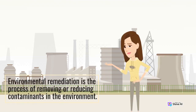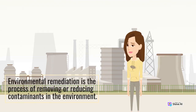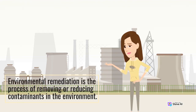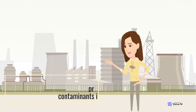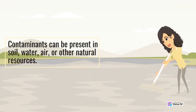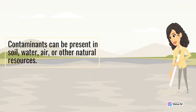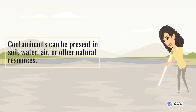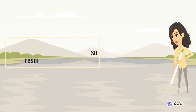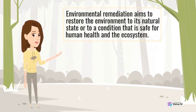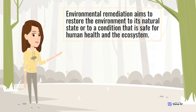Environmental remediation is the process of removing or reducing contaminants in the environment. Contaminants can be present in soil, water, air, or other natural resources. Environmental remediation aims to restore the environment to its natural state or to a condition that is safe for human health and the ecosystem.